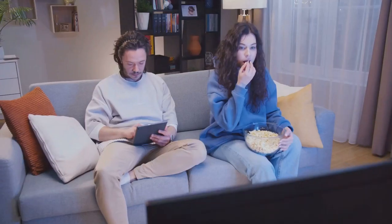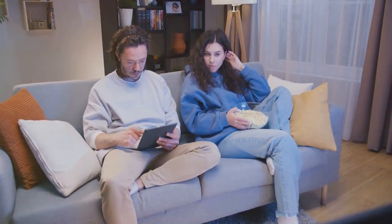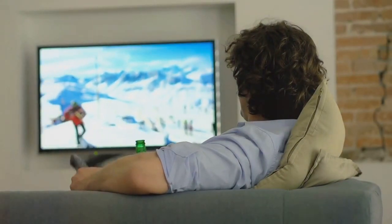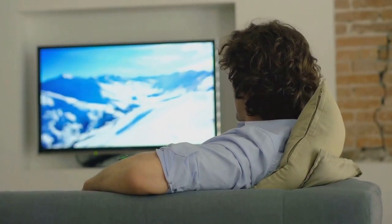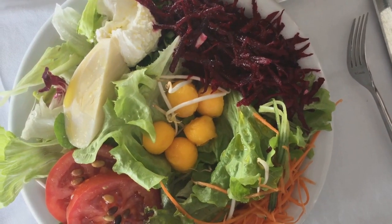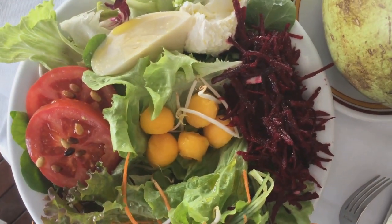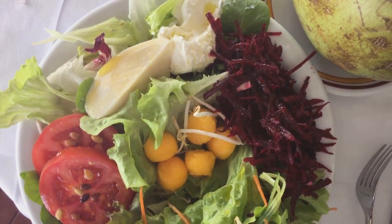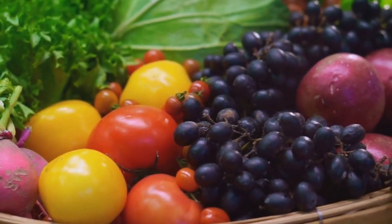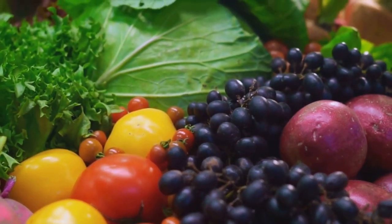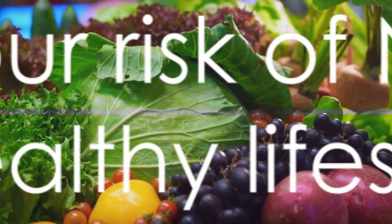A sedentary lifestyle and poor diet — particularly one high in fats and sugars — increase the risk of NAFLD because they contribute to obesity and insulin resistance. In contrast, a healthy lifestyle that includes regular physical activity and a balanced diet can help prevent NAFLD. Exercise helps control weight, reduces insulin resistance, and keeps your liver healthy. A diet rich in fruits, vegetables, whole grains, and lean proteins — and low in saturated fats, trans fats, and cholesterol — can help prevent NAFLD.